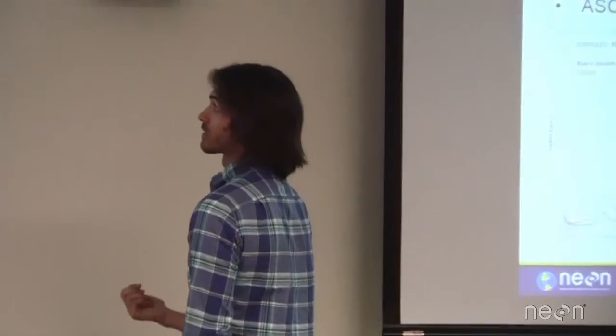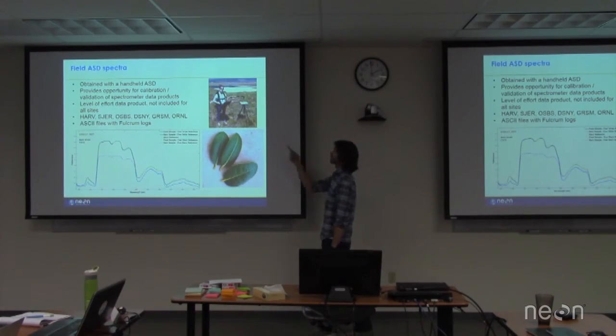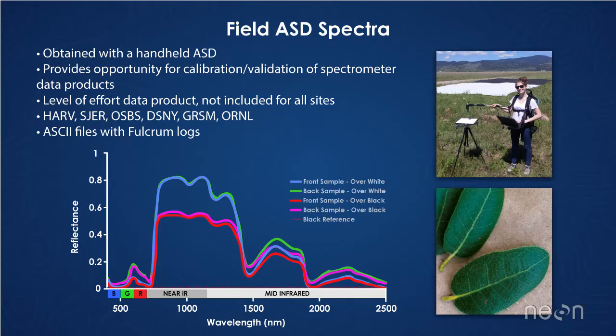And then, when we can, we also collect field ASD spectra. So this is one of our summer interns from last year, Catherine. She came out with the field with us, and she was using a handheld spectrometer. And so you can see we've got some tarps in the background there. And this essentially gives us the same type of information as the spectrometer, except there's a lot less of the errors and uncertainty associated with having it on an airborne platform. Because it's handheld, we can point this sort of viewing device at leaves or ground or the tarps and get really nice reflectance curves. Some of those are reflectance curves for some different vegetation on the bottom.